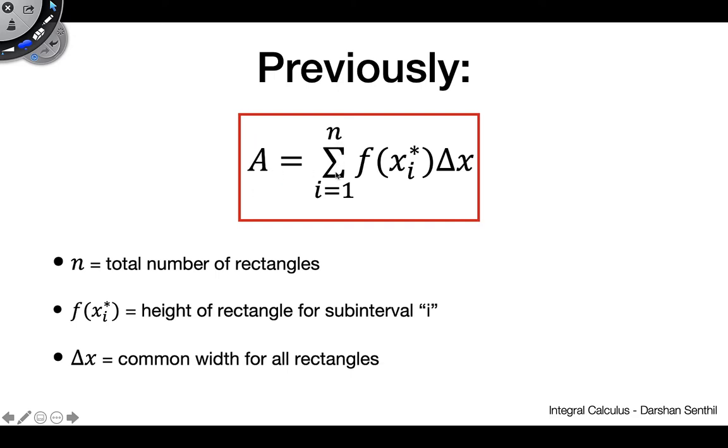The area is the sum from i equals 1 to n of f(x_i)*Δx. You remember that n is the total number of rectangles we use. f(x_i) is the height of each rectangle and we have a convention for choosing that height. We talked about the left, right, and midpoint Riemann sums.